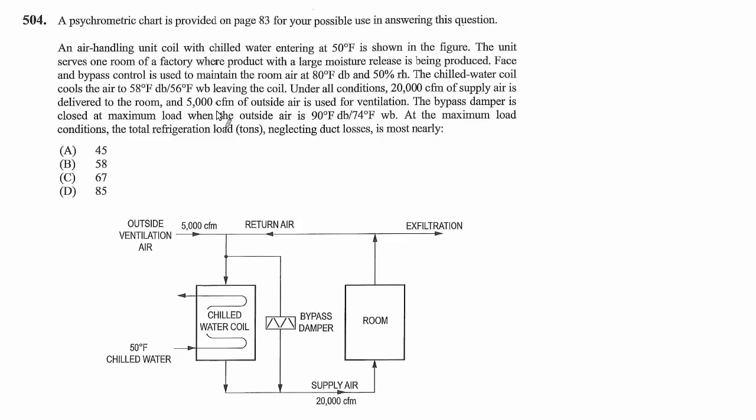Room air is maintained at 80°F dry bulb and 50% relative humidity. The chilled water coil cools the air to 58°F dry bulb, 56°F wet bulb leaving the coil under all conditions. 20,000 CFM of supply air is delivered to the room and 5,000 CFM of outside air is used for ventilation. The bypass damper is closed at maximum load when the outside air is 90°F dry bulb, 74°F wet bulb.